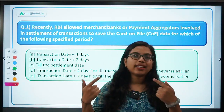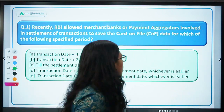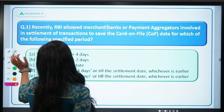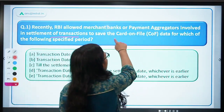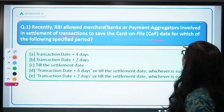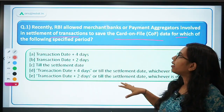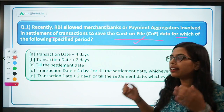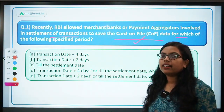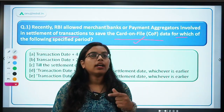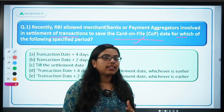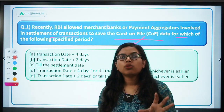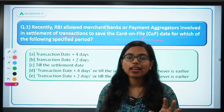So let's get started. There are certain questions along with their answers — we'll be reading both together. All of these news has already been discussed in the last month. Ye bas ek chota sa revision hai, ek recap hai, so that in case kuch news fade ho gayi ho aapke dimag se, you can remember. This will help you revise the entire month's RBI 247. The first question says: recently RBI allowed merchant banks or payment aggregators involved in settlement of transactions to save the card-on-file data for which of the following period. That is, RBI ne merchant banks ko allow kiya hai ki woh card-on-file data ko store kar sakte hai for how long? So, card-on-file data — that is all your card-related data, be it your account number, card number, or CVV number — should not be stored by any of the merchants, whether online or offline, only for transaction purposes.